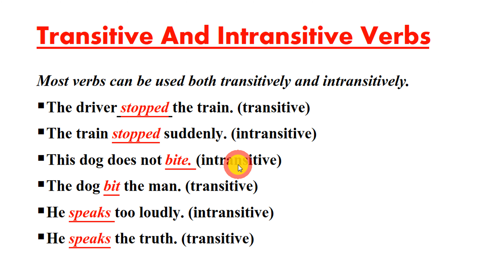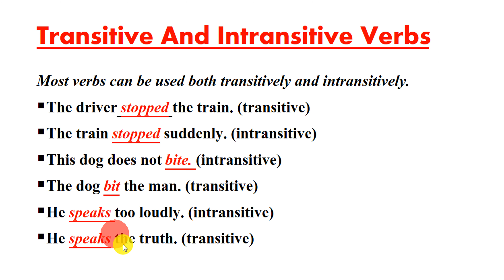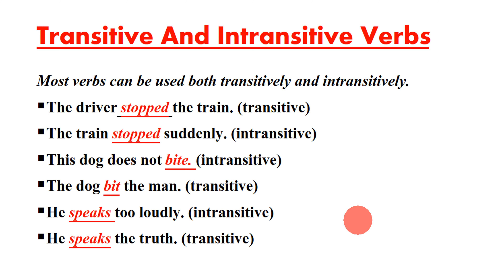Let's look at more examples. This dog does not bite — the verb 'bite' is intransitive. The dog bit the man — here the verb 'bit' is transitive. He speaks too loudly — here the verb 'speaks' is intransitive. He speaks the truth — here the verb 'speaks' is transitive.